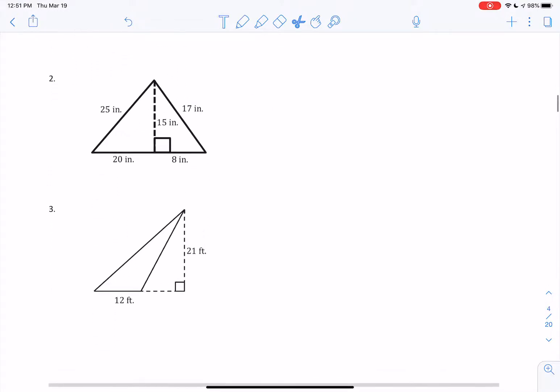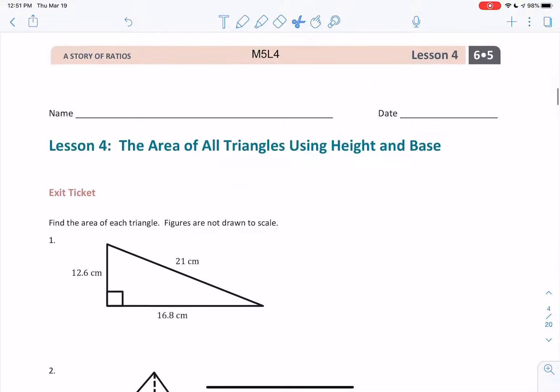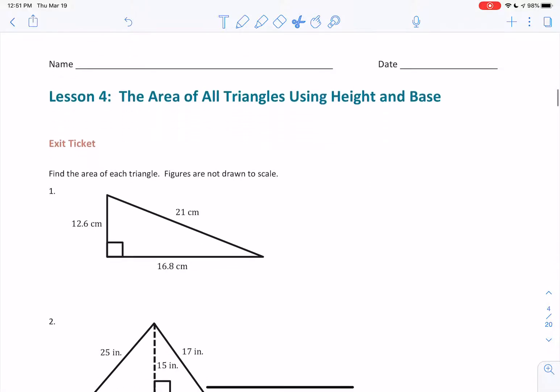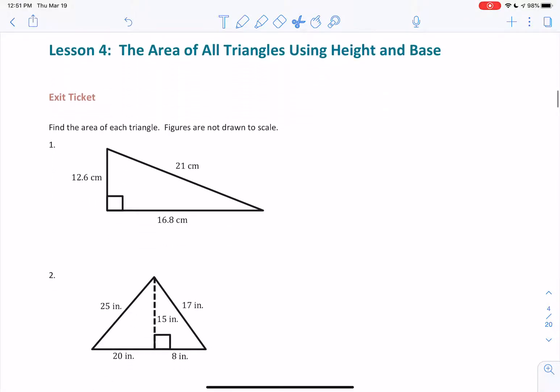You should print out the exit ticket or once again, use your notebook so that you can be completing this page. As you can see on the screen, these are the three problems you will be working on. Do them on paper first. After you do them on paper, go to the Google Classroom assignment, submit your answers, and hopefully you put in the work ahead of time so that you can get the correct answers.